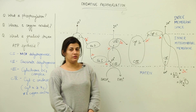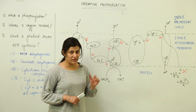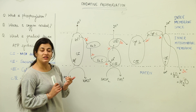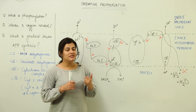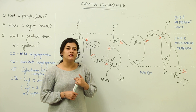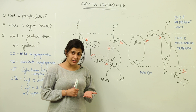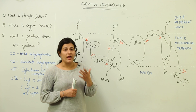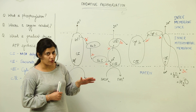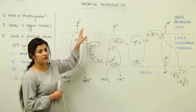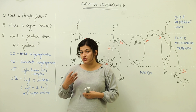Let us take a detailed discussion of the third step of respiration: aerobic respiration. We discussed that the first step was glycolysis, universal to aerobic and anaerobic respiration. The second was the Krebs cycle, happening in the mitochondria. Whatever has been formed in the Krebs cycle — NADH, FADH2, and ATPs — would be utilized as we move to the third step: oxidative phosphorylation.